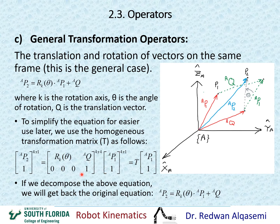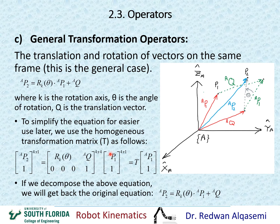If we decompose or multiply the matrix and vector together, we get back to our original equation: R_K(theta) times P1 relative to A, plus Q relative to A. The last row — zero, zero, zero times P1/A gives zero, and one times one gives one — confirming the one at the bottom. This is a simplified way of finding that relationship using the homogeneous transformation matrix.